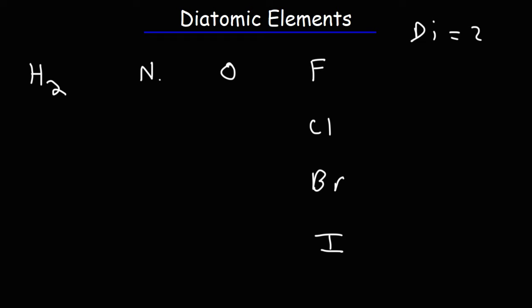Nitrogen gas in its natural state exists as N2. Oxygen gas exists as O2. Now oxygen doesn't always exist as O2, but under standard conditions, that is at room temperature and at an atmospheric pressure of 1 atm, it is most stable in this form.